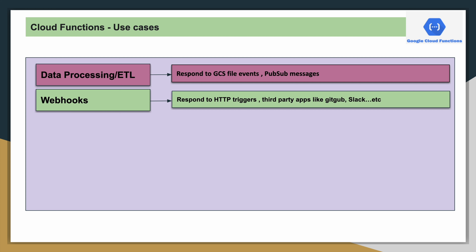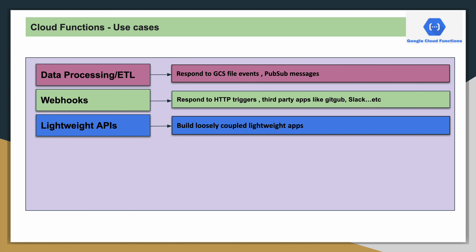The second use case is webhooks — you can write your code or logic based on HTTP events or triggers. For example, if something is happening on third-party apps like GitHub, Slack, etc., you can write logic on top of those events. Another use case is lightweight APIs — you can design and build a complete microservice architecture with loosely coupled apps.